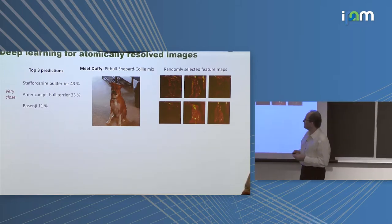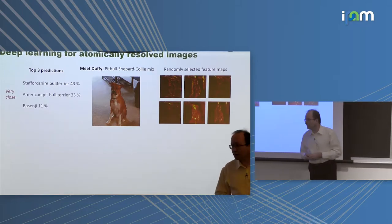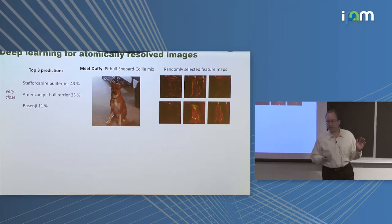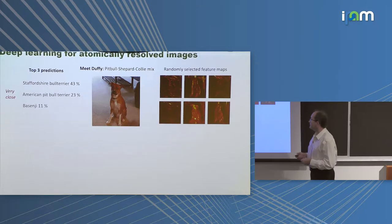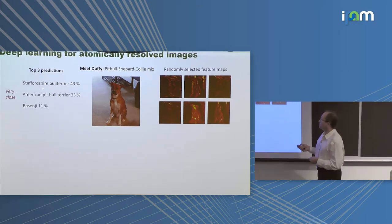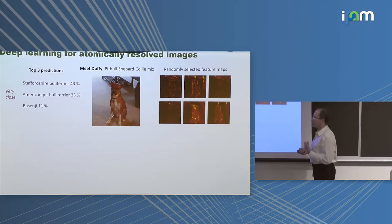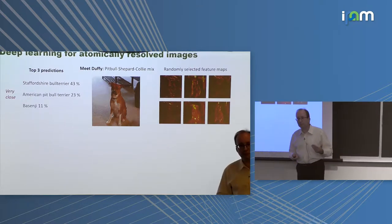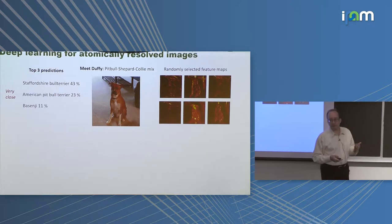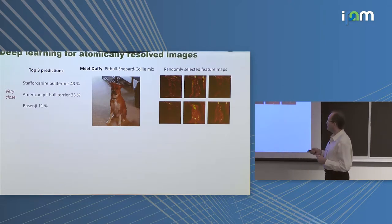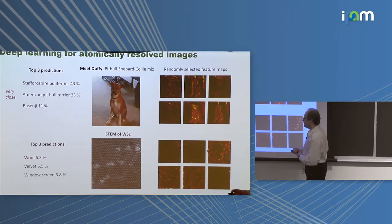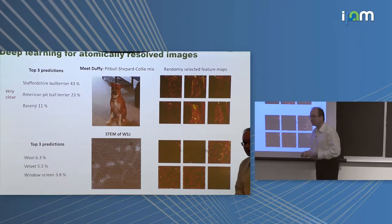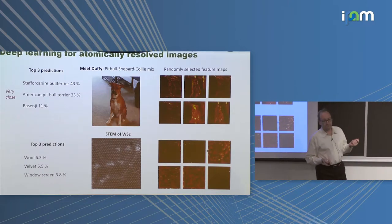And then three years ago, one of my colleagues said, there's this new thing, deep learning. How about I learn it? So he disappeared for half a year. And I said, yeah, now I can download TensorFlow, I can take a picture of my dog, download VGG-19, and the network which never seen this dog can identify it. And then we took the network, put the image of the atomic structure, and it's all wool, velvet, window screen, whatever. Very simple. Apparently there are tens of thousands of people on Google and Facebook that create labeled data of cats and dogs, but no one has tried to label atoms for me.